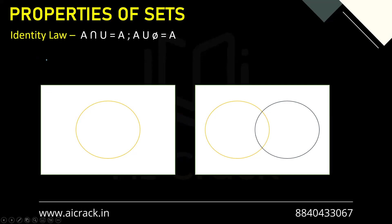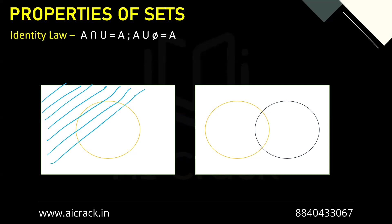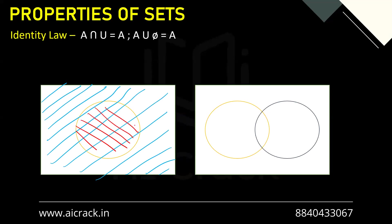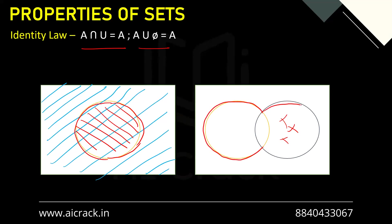Now let's talk about identity law, which states that A intersection universal set equals A, and A union null set (phi) equals A. The entire region is our universal set. When we intersect a set with the universal set, the cross-checked lines cover only the elements of A, so A intersection universal set gives A. Similarly, A union phi — since phi has no elements, all we have are elements of A. So A union phi equals A.